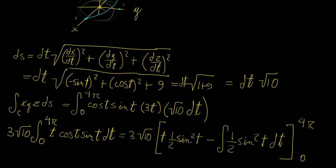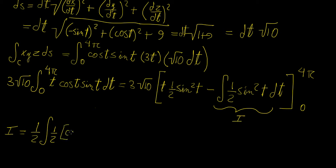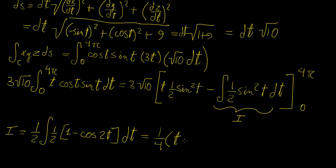To integrate sine squared t, we use the trigonometric identity: sine squared t = one-half (1 − cosine 2t). So the integral becomes one-half times one-half times the integral of (1 − cosine 2t) dt, which equals one-quarter times (t minus one-half sine 2t), or written out: 1/4 · t − 1/8 · sine 2t, plus a constant.